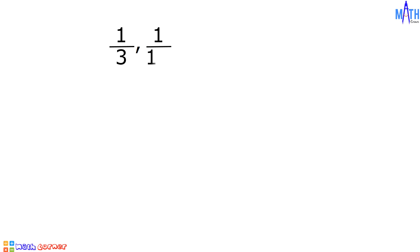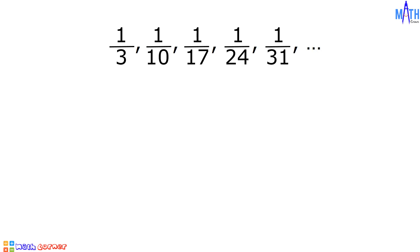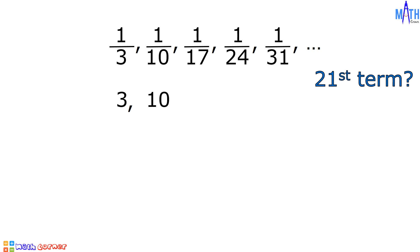Third example, we have 1/3, 1/10, 1/17, 1/24, 1/31, and so on. Let us determine the 21st term of this harmonic sequence. The reciprocal of 1/3 is 3, reciprocal of 1/10 is 10, reciprocal of 1/17 is 17, reciprocal of 1/24 is 24, and reciprocal of 1/31 is 31.